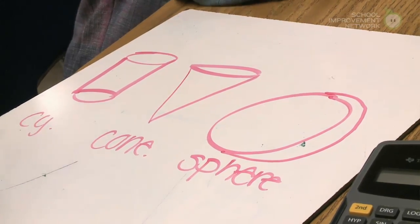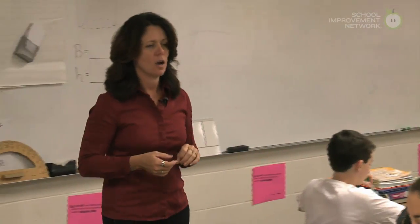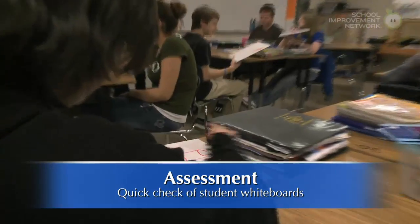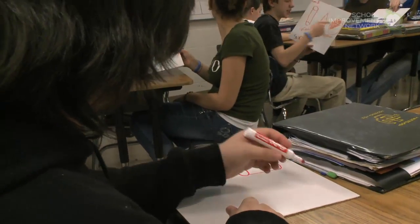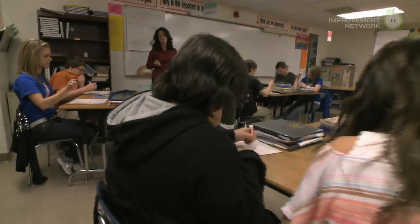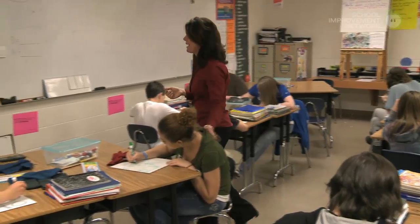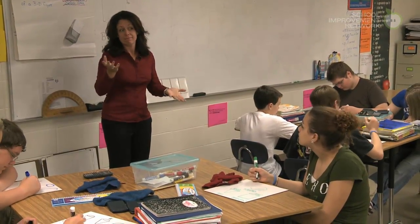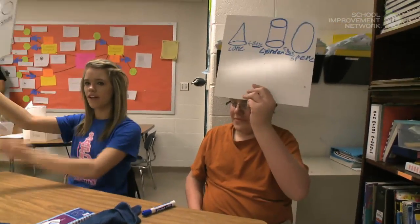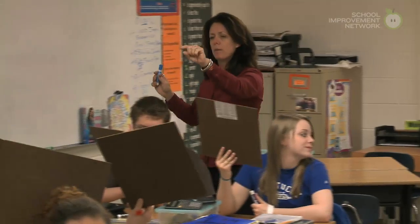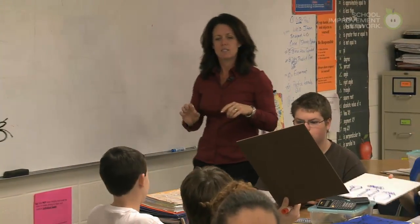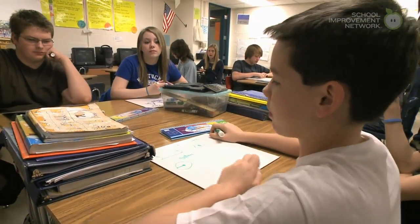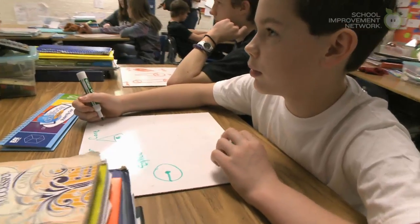Once you've drawn the cylinder, the sphere, and the cone, hold them up. Get some labels on yours. What I want you to do is locate the base — find the base of each one. That's an important piece for volume today. A student asked: what if they don't have a base? What shape is the base of each one of these 3D objects? A circle. So what formula would we need to start with?